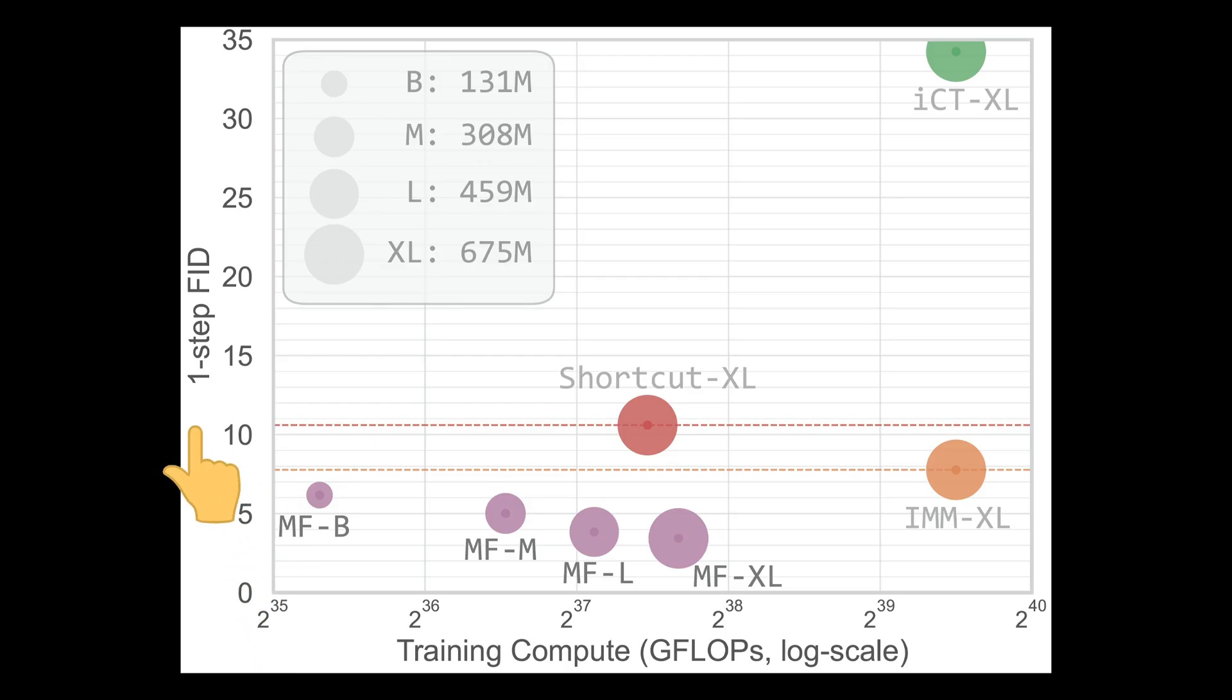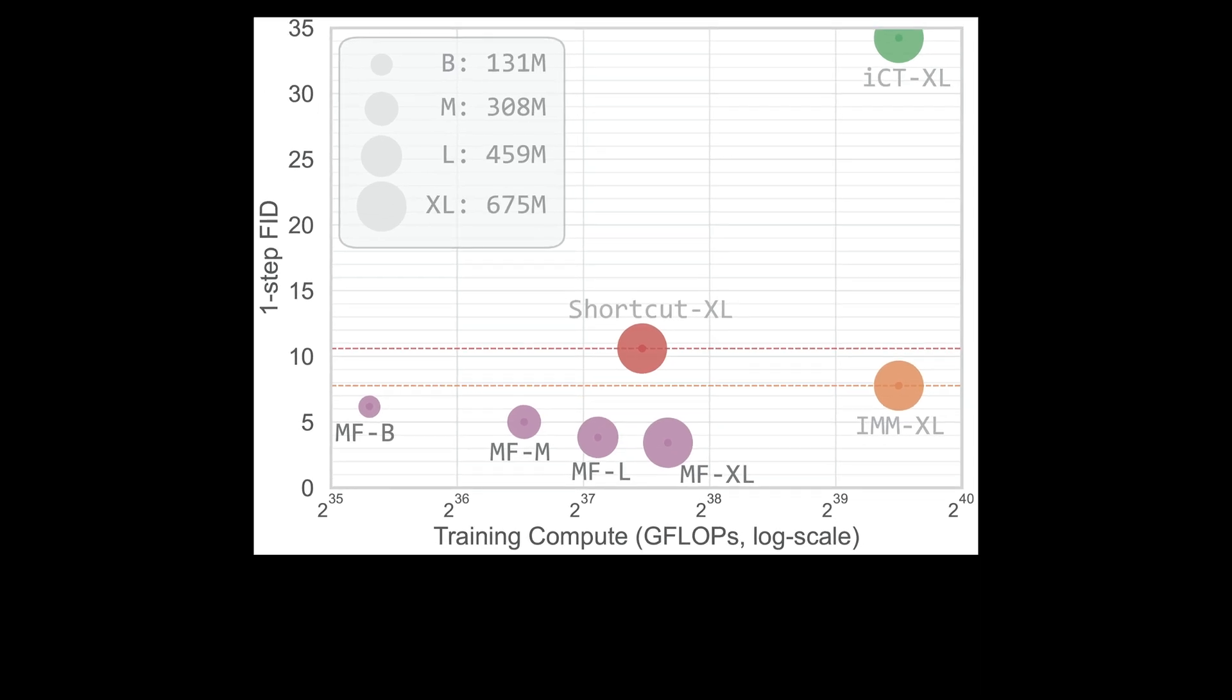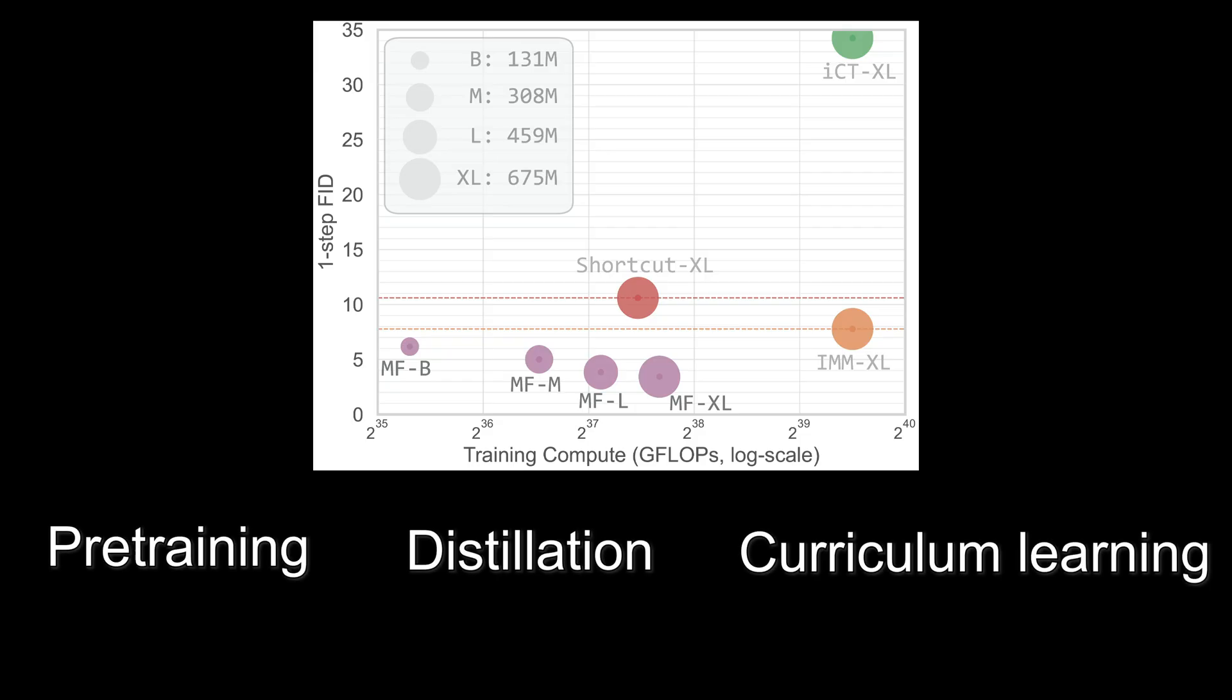Let's take a look at the core results. The horizontal axis shows the training compute. The vertical axis shows the FID score measuring how realistic the samples are. The lower the better. The size of the circle denotes the size of the model. We see very promising results compared to other one-step diffusion or flow-based methods. So, perhaps the most exciting part is that this method does not require any complicated training tricks like pre-training, distillations, or curriculum training.